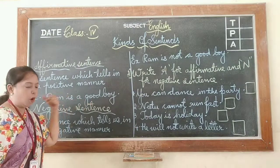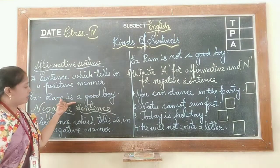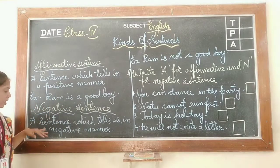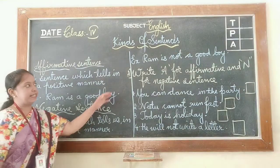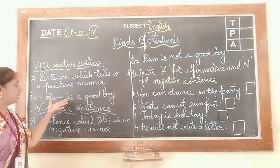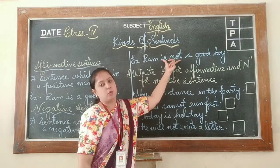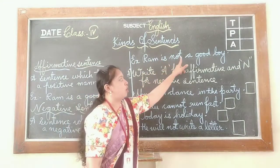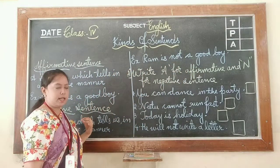For example, 'Ram is a good boy' is an affirmative sentence. If we add 'not' — 'Ram is not a good boy' — the positive sentence changes to a negative sentence. So understand: adding 'not' changes an affirmative sentence to a negative sentence.